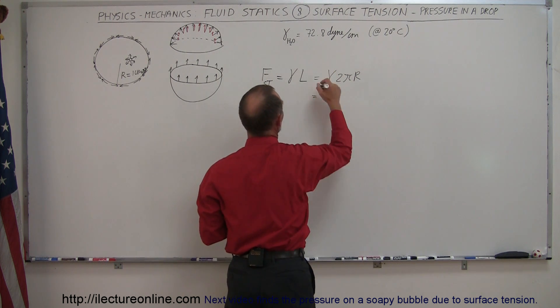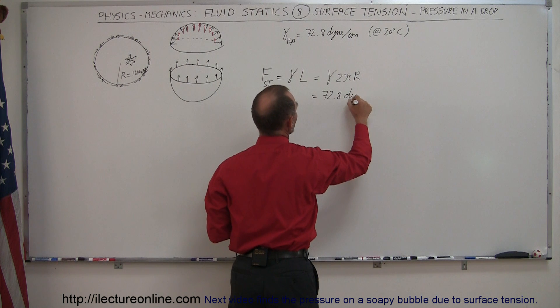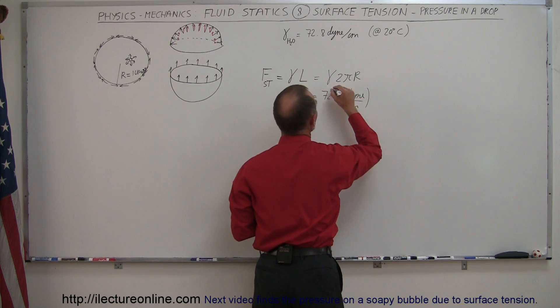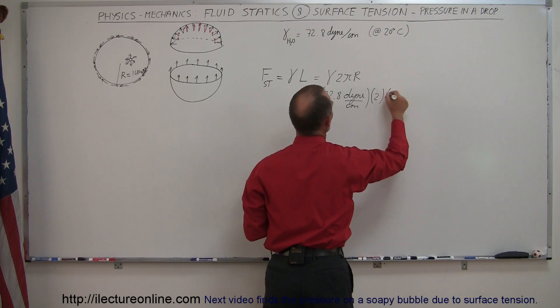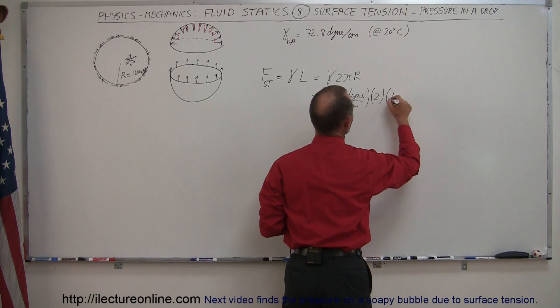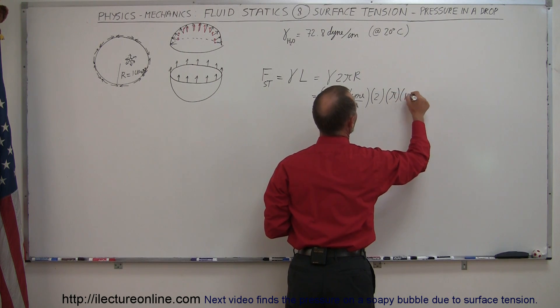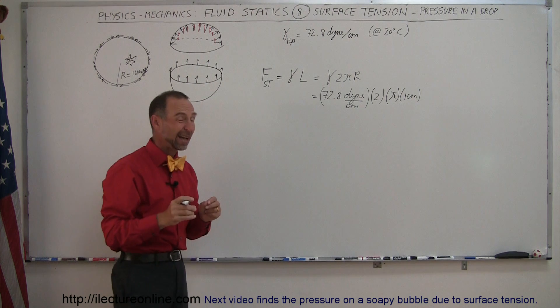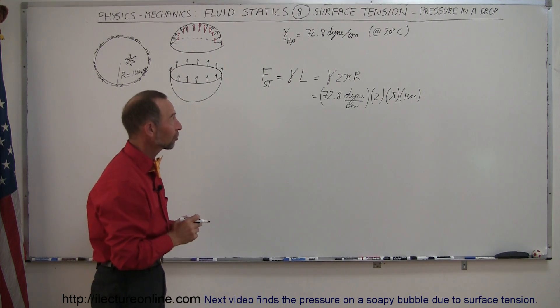So the surface tension is equal to 72.8 dynes per centimeter. That's, of course, for water at 20 degrees centigrade. Multiply that times 2 times the radius. And we said that the radius was 1 centimeter. That is kind of a big drop. But later on, we'll then scale it down to smaller drops and see how that changes when the size of the drop changes.